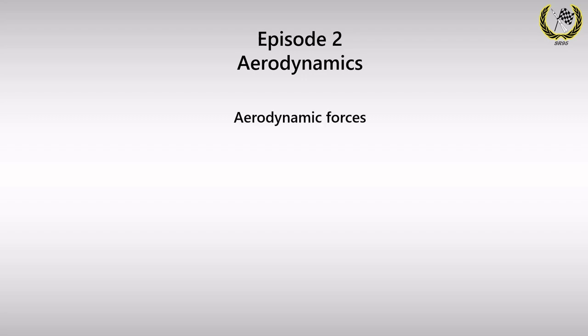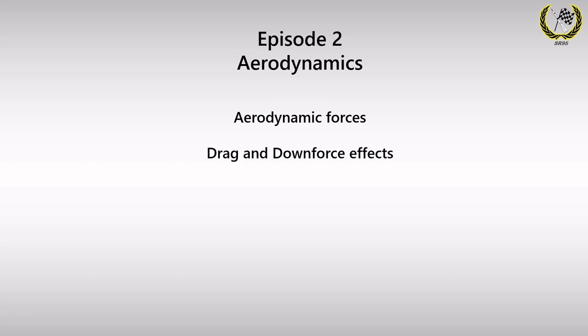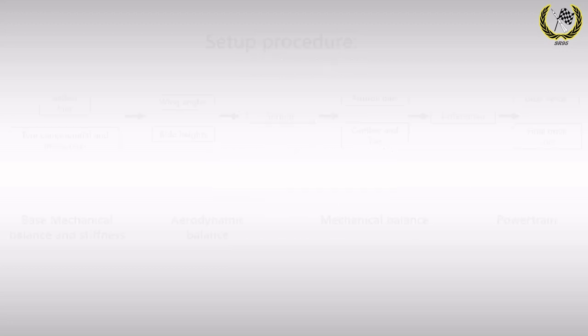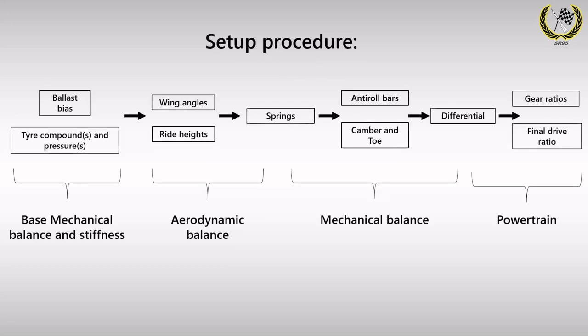The topics we'll cover include an overview of aerodynamic forces acting on a vehicle, followed by their effects on top speed. We'll then look at ways in which the balance of aerodynamic forces can be biased to either the front or the rear of the vehicle. Finally, we'll observe the effects of these setups in two different examples. You can see where aero setup lies in the vehicle setup procedure sequence shown in the previous video.